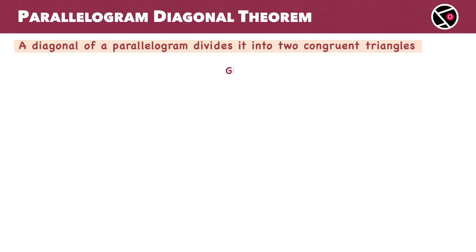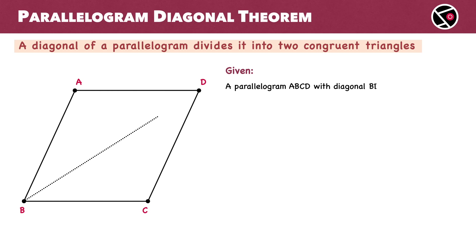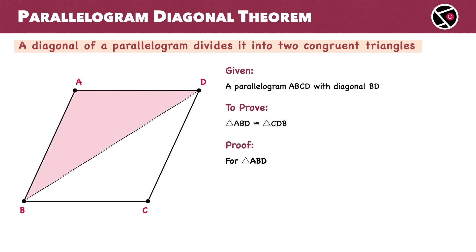So, what do we have? We have a parallelogram A, B, C, D with diagonal BD. Our goal is to prove that triangle ABD is congruent to triangle CDB. For the proof, we start with triangles ABD and CDB.